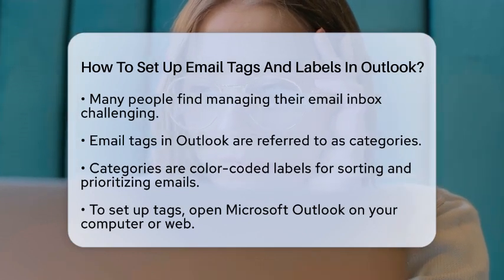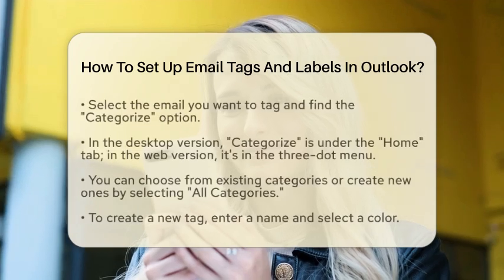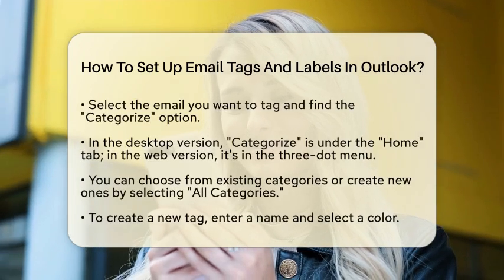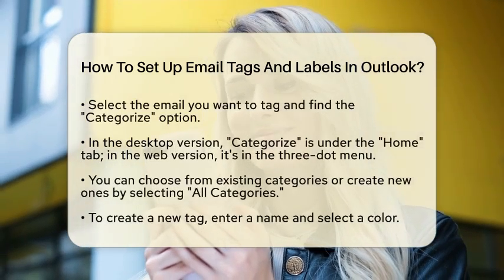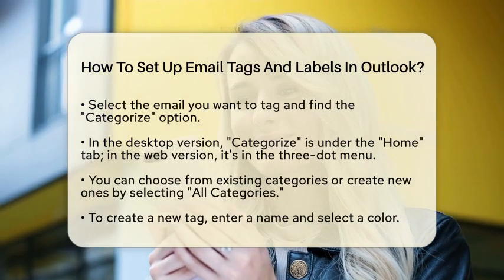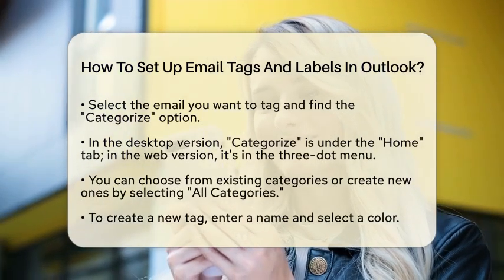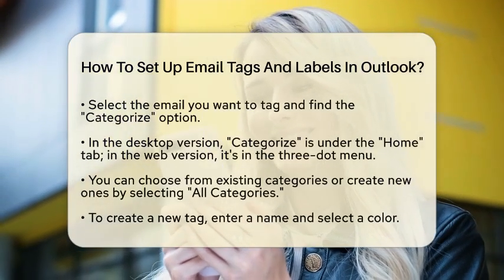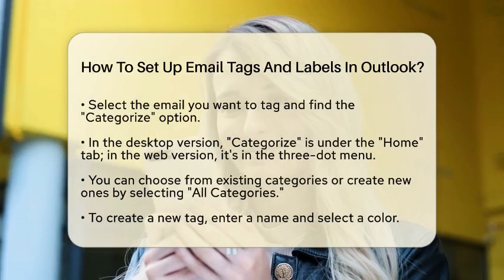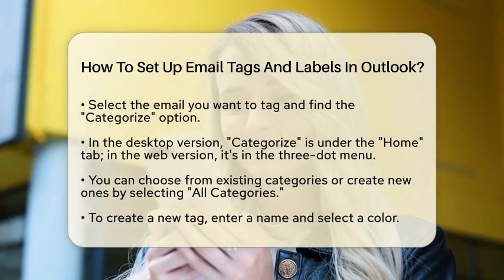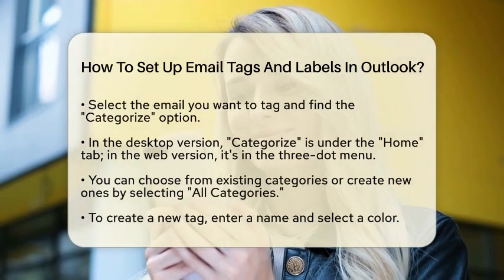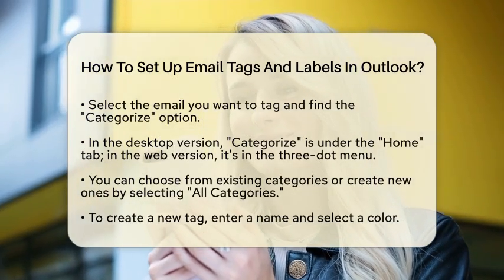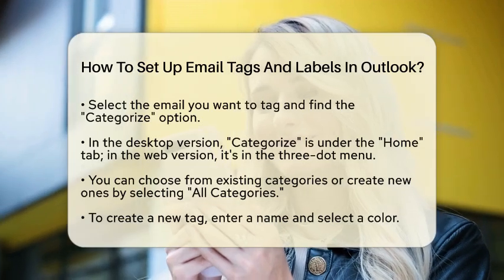To get started, open Microsoft Outlook, either on your computer or through the web. Once you are in your inbox, select the email you want to tag. Next, look for the Categorize option. If you are using the desktop version, you will find this under the Home tab. For the web version, click on the three-dot icon and select Categorize.